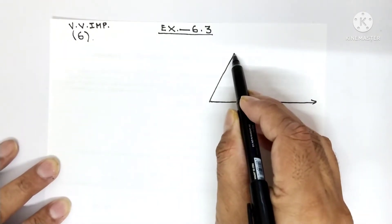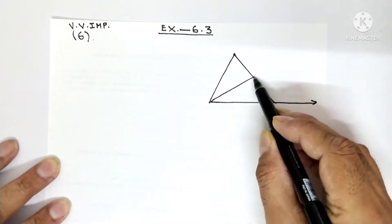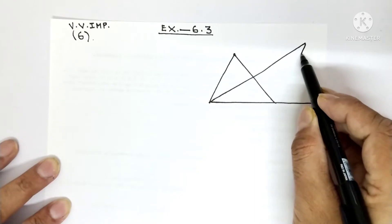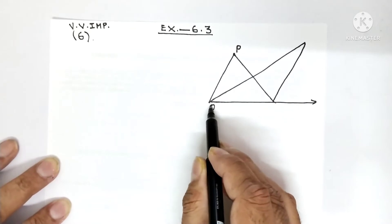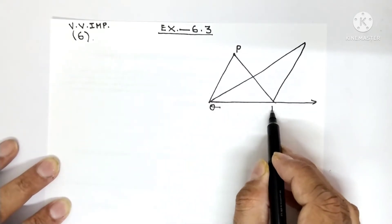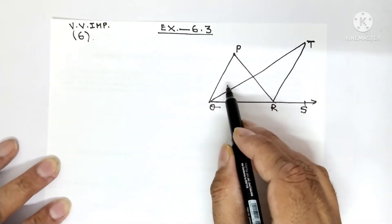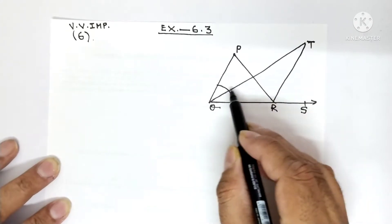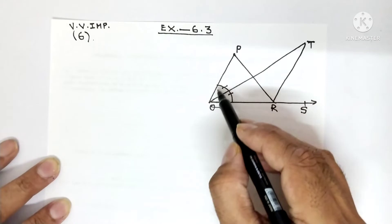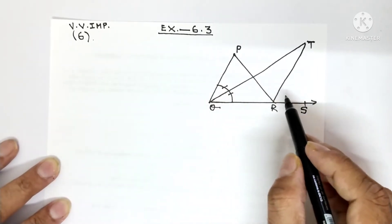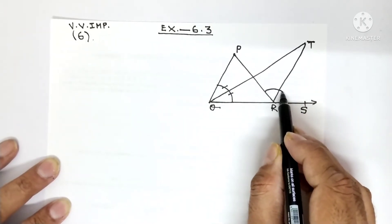So this figure I am drawing, draw it with me. This is point P, this is point Q, this is point R, this is point S, and this is point T. Now, this QT is the bisector of angle PQR and this TR is the bisector of angle PRS.